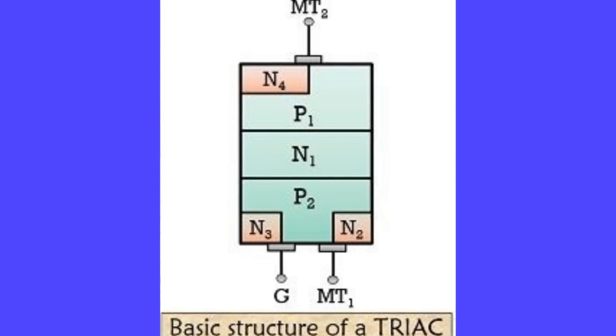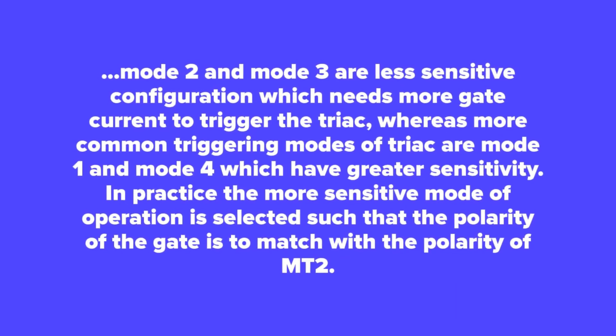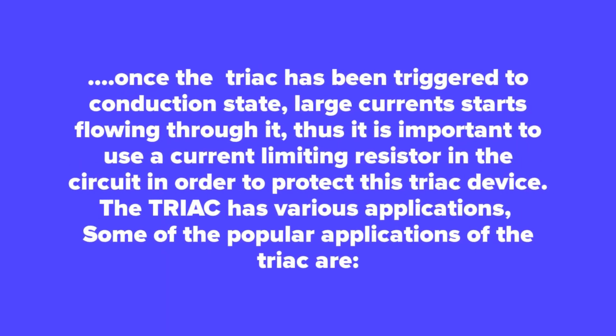We can now conclude that Mode 2 and Mode 3 are less sensitive configurations which need more gate current to trigger the TRIAC, whereas the more common triggering modes are Mode 1 and Mode 4, which have greater sensitivity. In practice, the more sensitive mode of operation is selected such that the polarity of the gate matches the polarity of MT2. Once the TRIAC has been triggered to the conduction state, large current starts flowing through it, so it is important to use a current limiting resistor in the circuit to protect the TRIAC device.